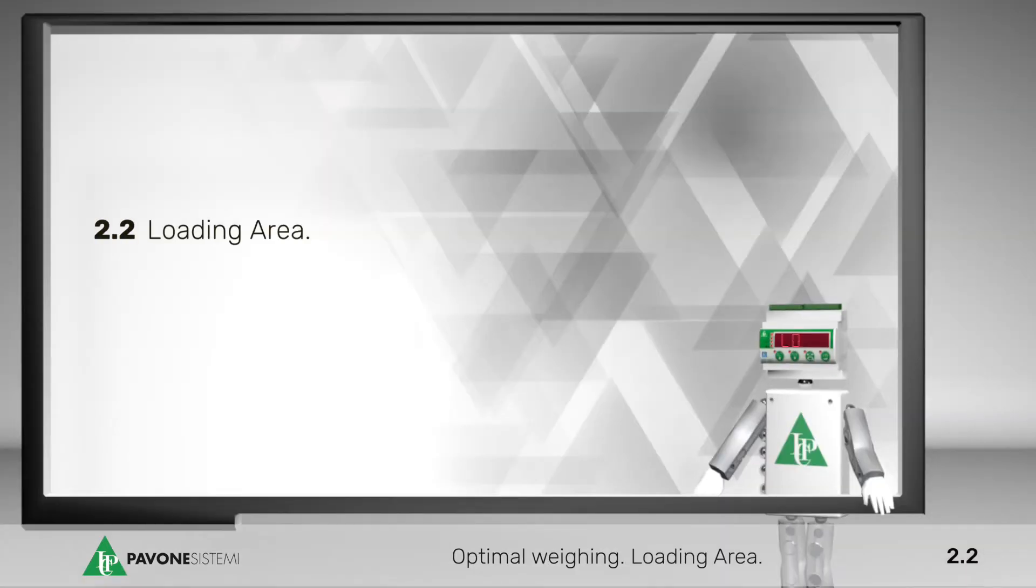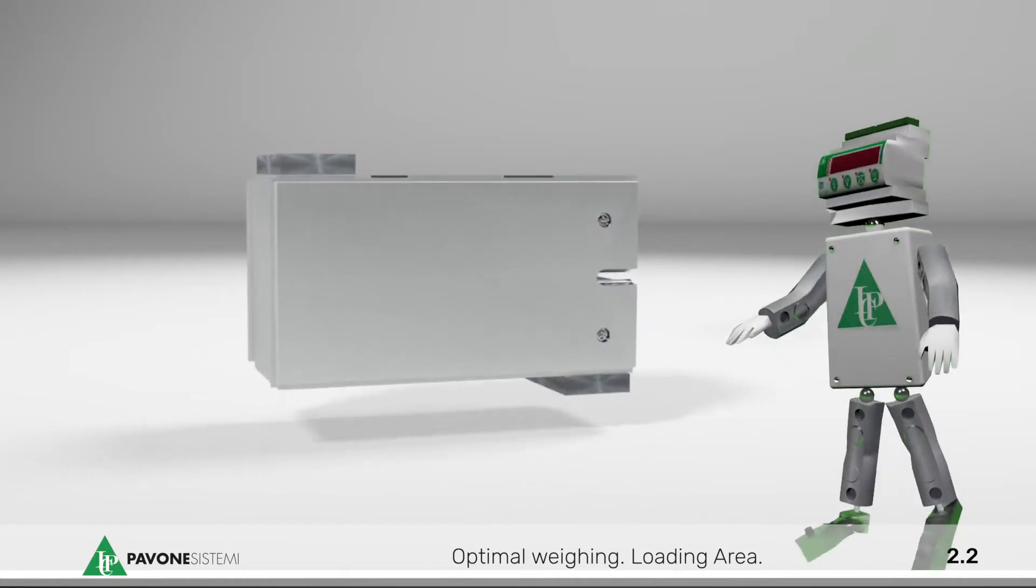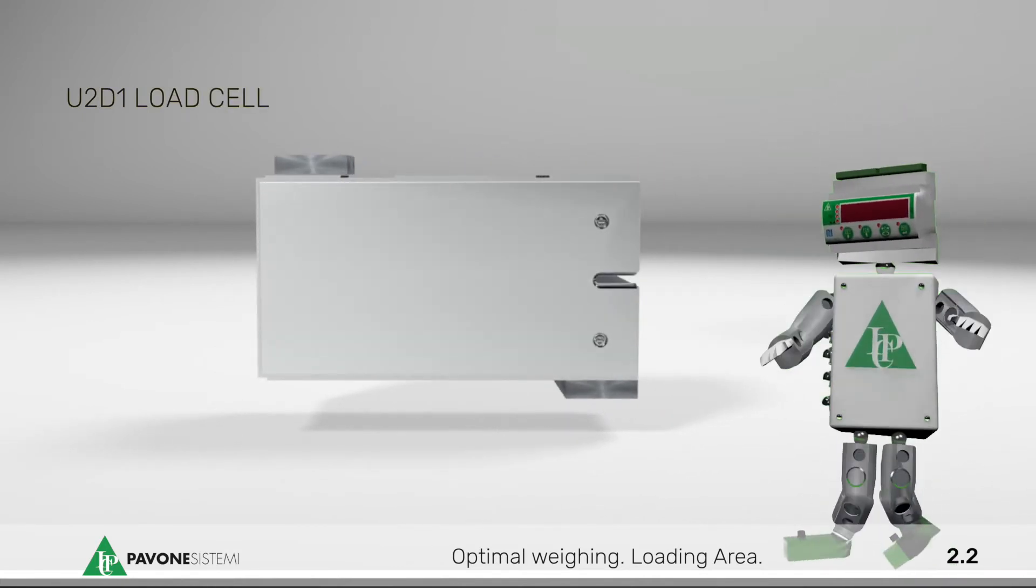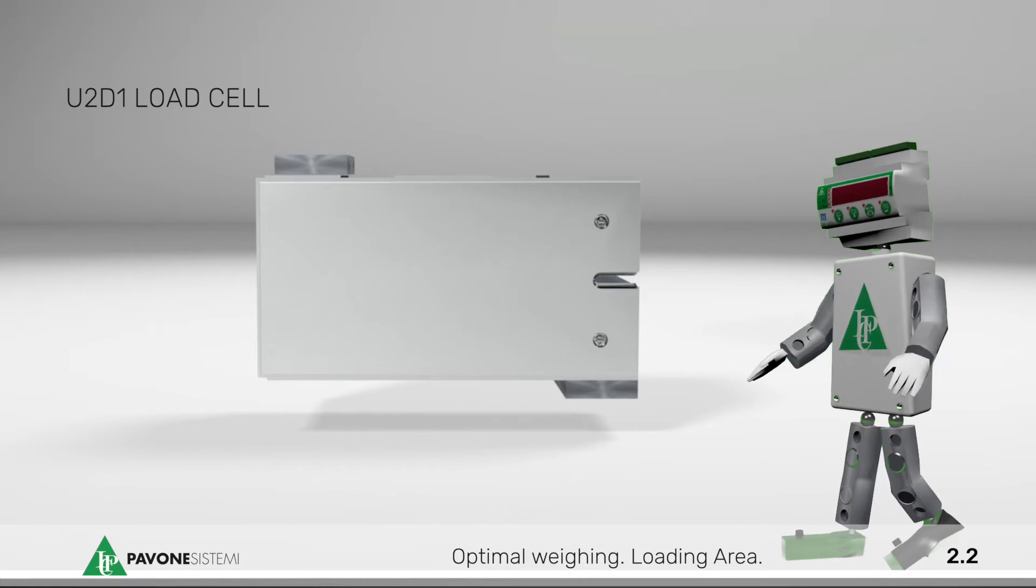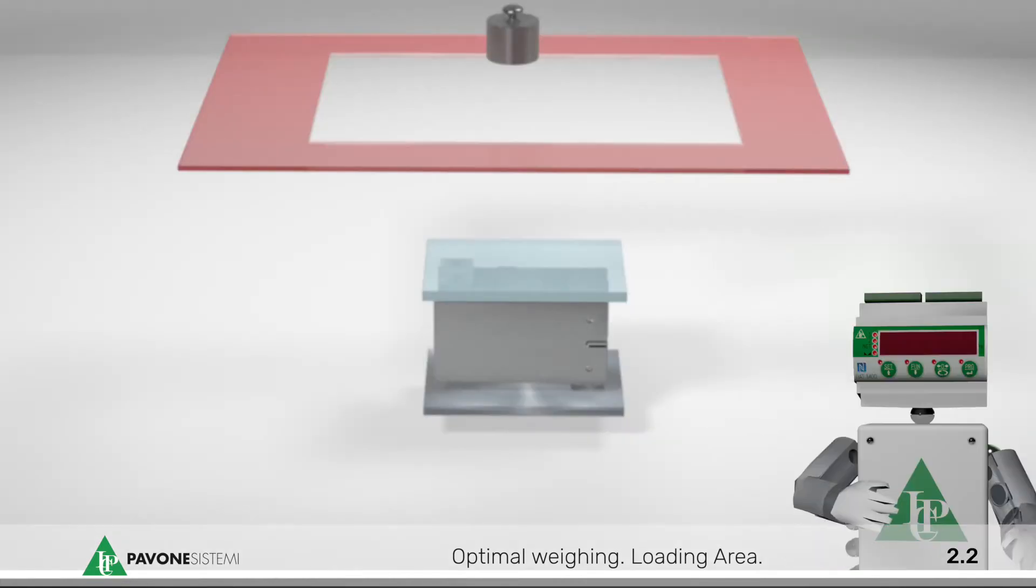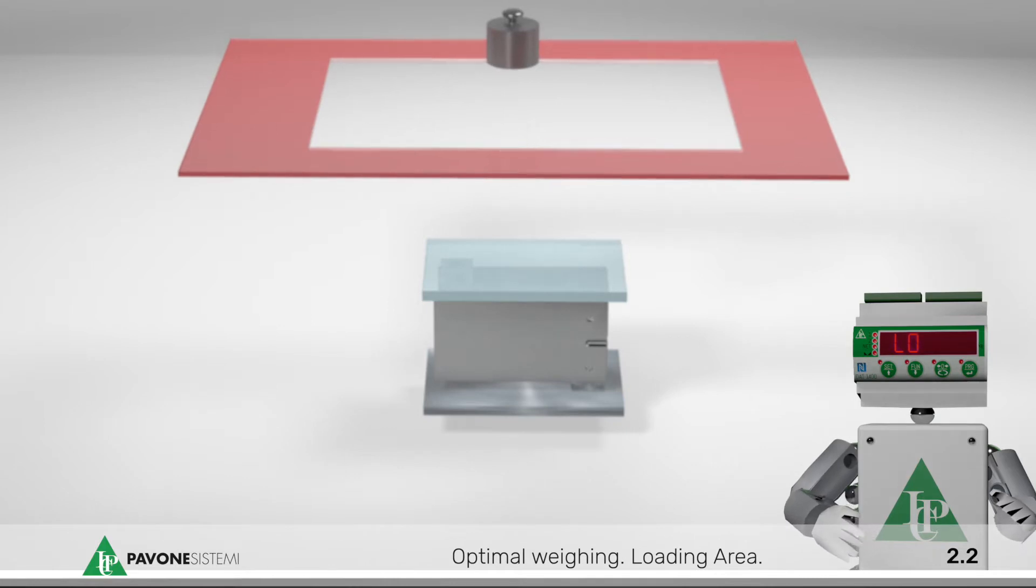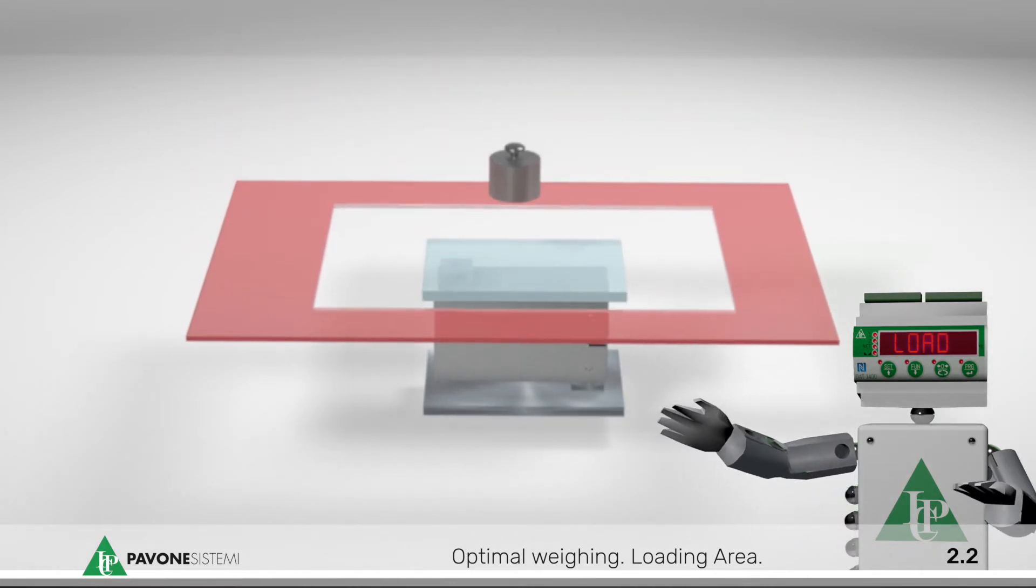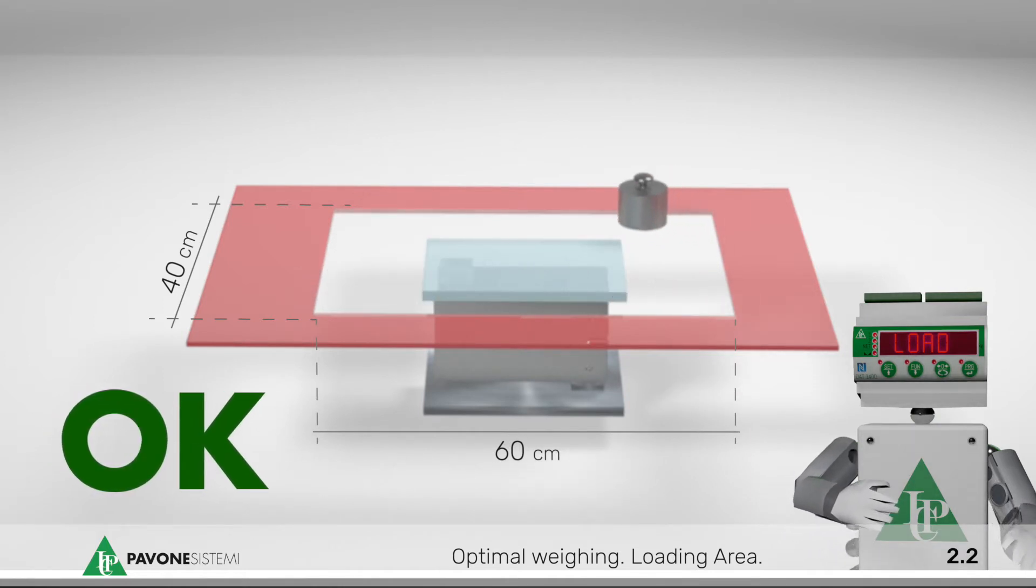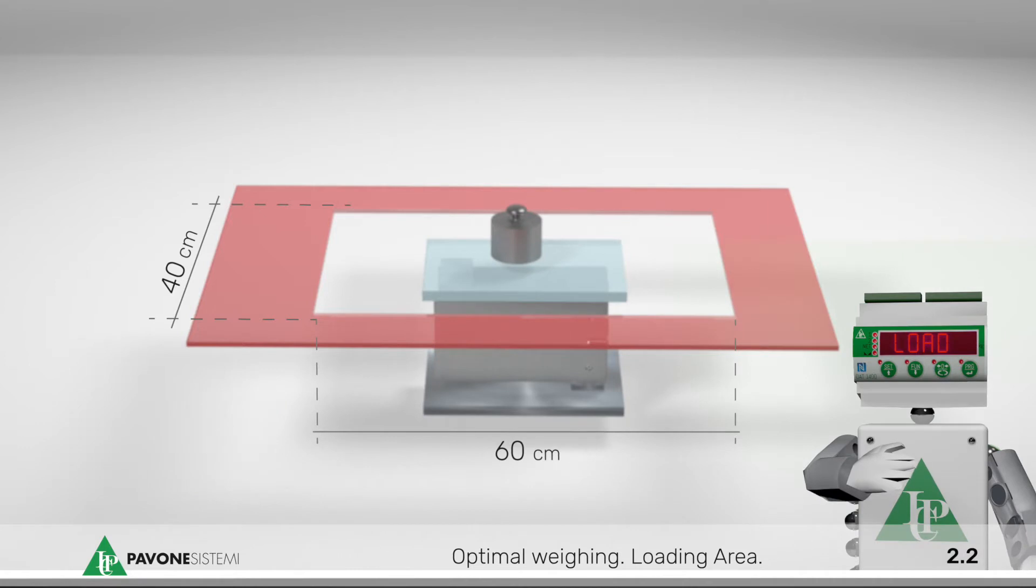Loading Area. Off-center load cells are able to weigh correctly within the limits of the area stated on the datasheet. For example, if a load cell is being used that is guaranteed for an area of 40 by 60 cm, we are certain that by applying a load at any point of a structure of such dimensions,